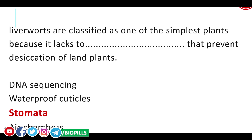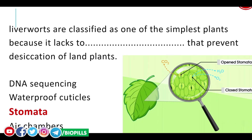Liverworts are very primitive forms of plants — they are classified as non-vascular plants and grow closer to water, so they do not need stomata. Stomata are pores through which water vapor escapes from plants, and through which carbon dioxide and oxygen are exchanged.